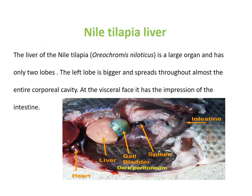Now we will discuss the structure of the Nile tilapia liver. The liver of Nile tilapia is a large organ with two lobes. The left lobe is bigger and spreads throughout almost the entire corporeal (body) cavity. At the visceral face, it has the impression of the intestine.